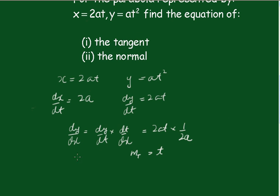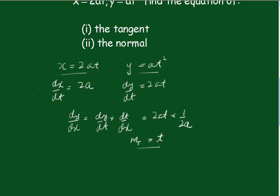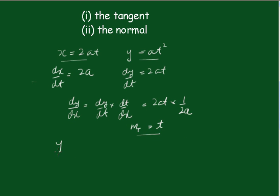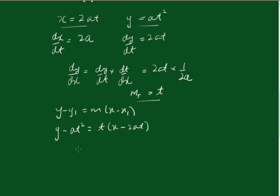We have the point x equals 2at and y equals at squared, and we have the gradient t. Using the point-gradient form — y minus y1 equals m times (x minus x1) — substituting gives us y equals tx minus at squared as the equation of the tangent.